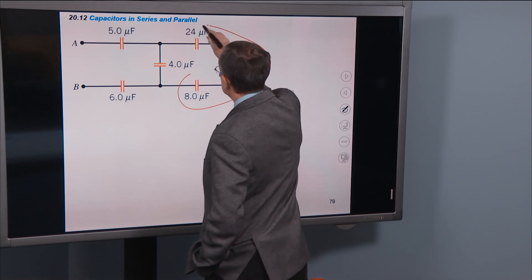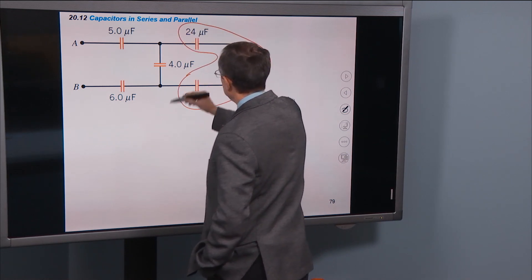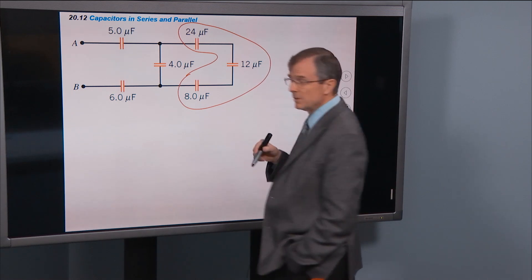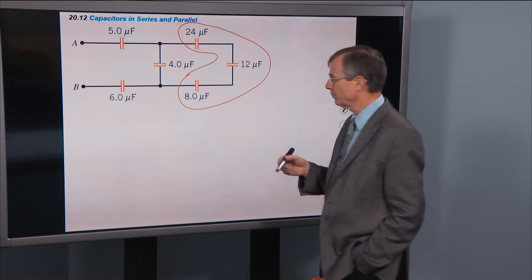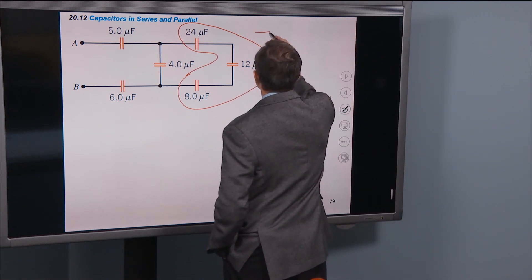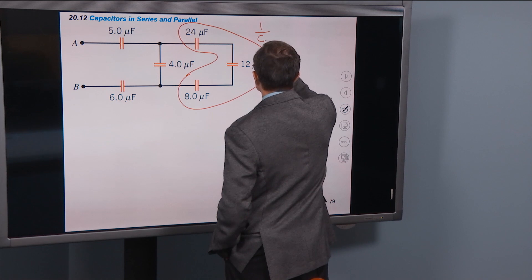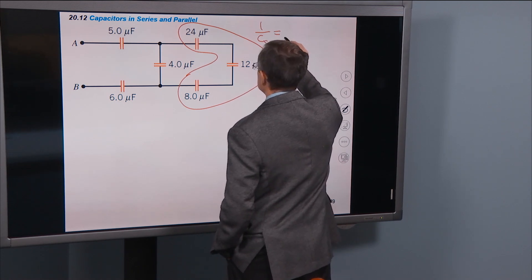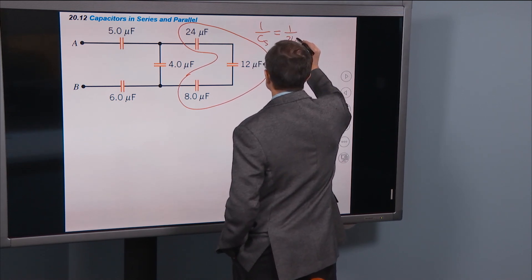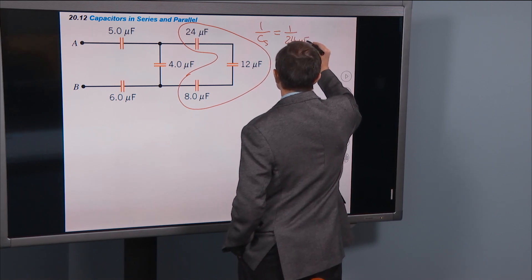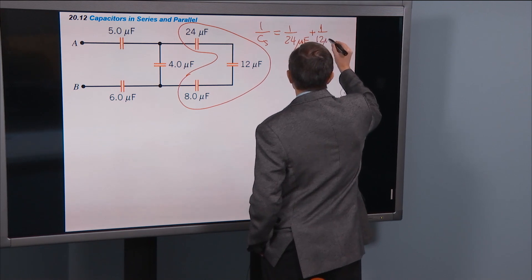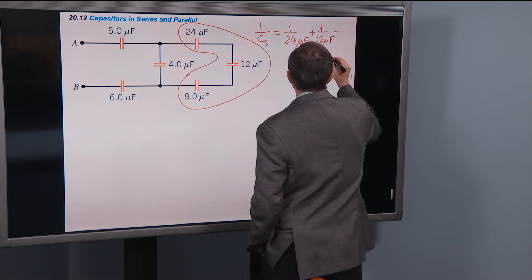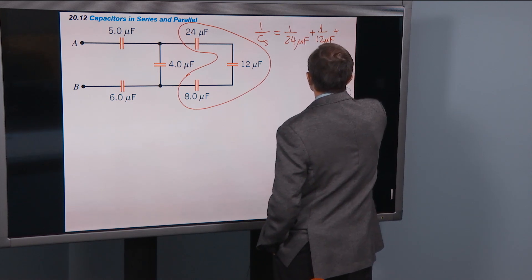So here we have three capacitors that are in series with each other. So I'm first going to find the equivalent capacitance for these three. Well if they're in series, we can't just add them up like resistors, we have to add up one over. 1 over the equivalent capacitance for capacitors in series: 1 over 24 microfarads plus 1 over 12 microfarads plus 1 over 8 microfarads.